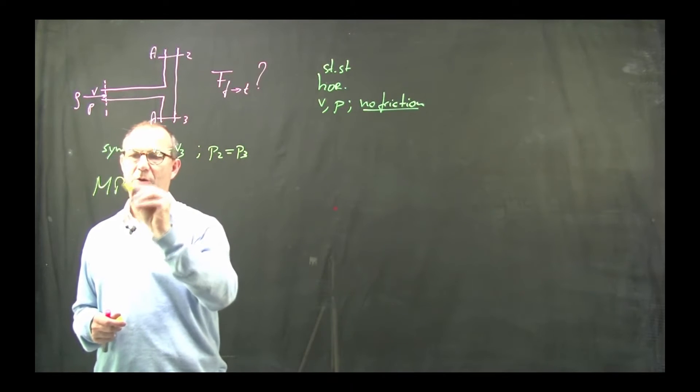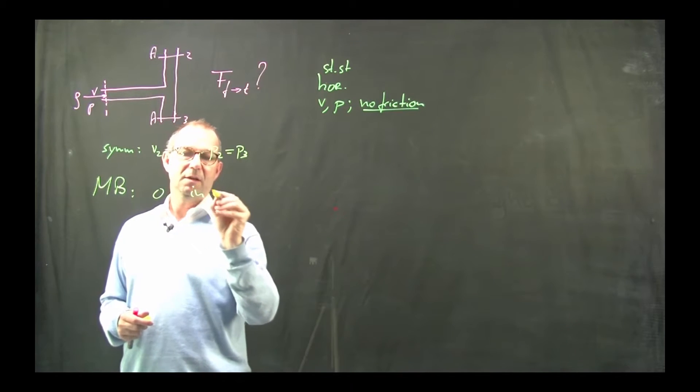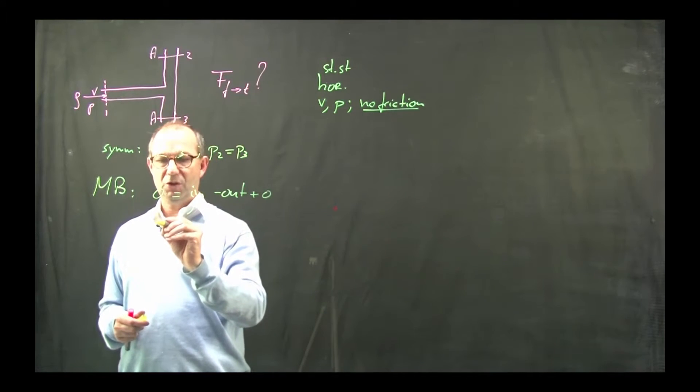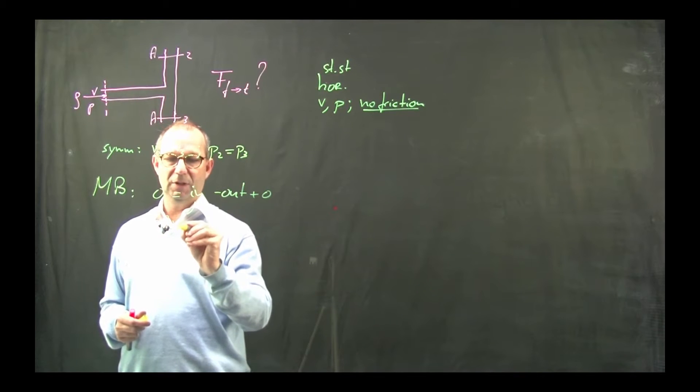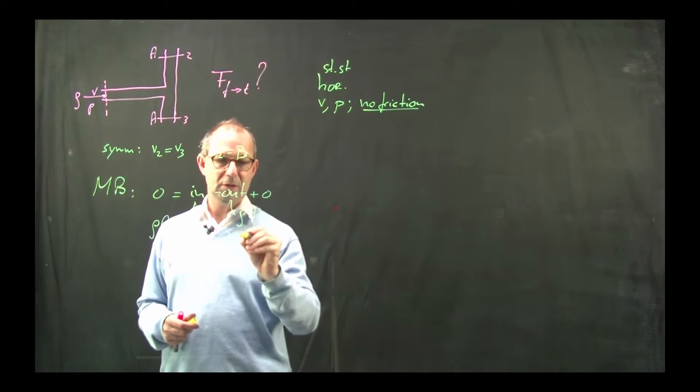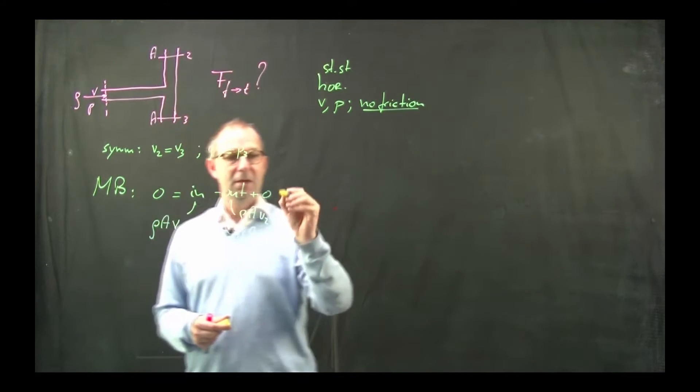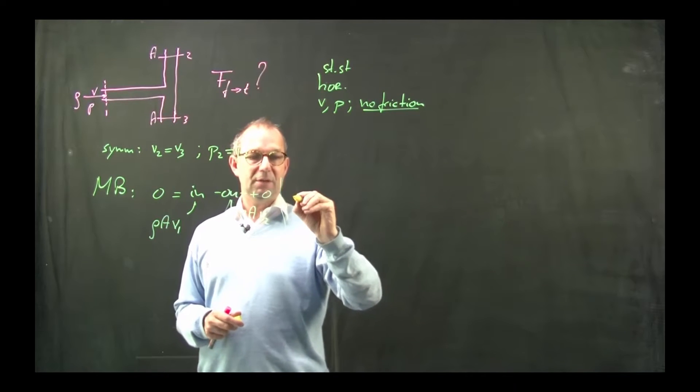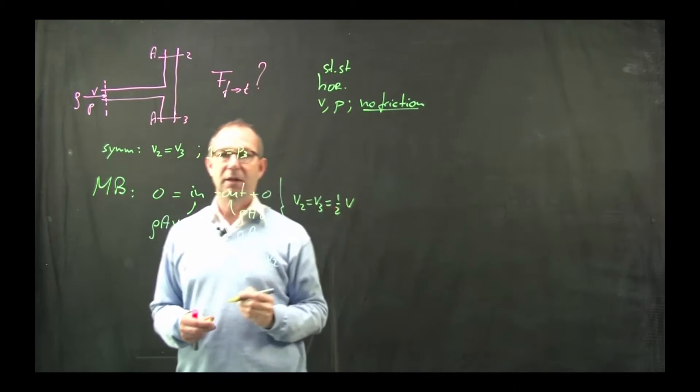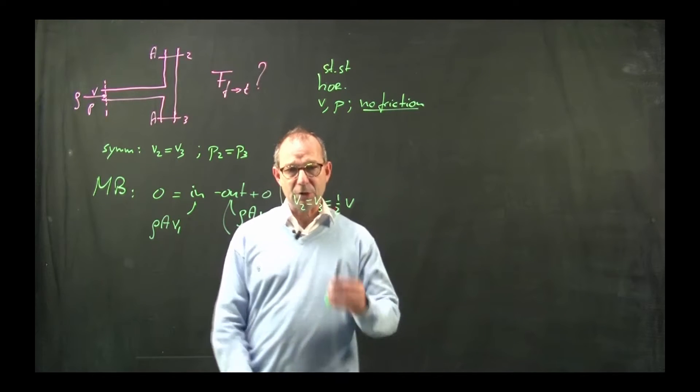Okay, so my mass balance is the first that I'm going to consider. And that reads as 0 because of steady state equals in minus out plus 0 as there is no production. There is only one in term which is rho A v1. And there are two outflows, rho A v2 and rho A v3 which I can write as v2 because of the symmetry. So out of this you quickly see that the outgoing velocity v2 equals v3 is half the incoming velocity v1.